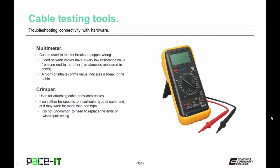First up is the multimeter. It can be used to test for breaks in copper wiring. Good network cables have a very low resistance value from one end of the cable to the other. Resistance is measured in ohms. A high or infinite ohms value indicates a break in the cable. So you can use multimeters to test for continuity to make sure that traffic can flow from one end to the other.